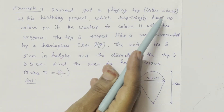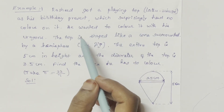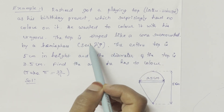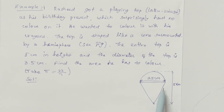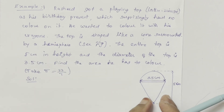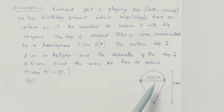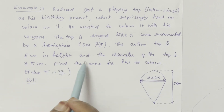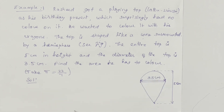Raseed got a playing top as his birthday present, which surprisingly had no colour on it. He wanted to colour it with his crayons. The top is shaped like a cone surmounted by a hemisphere — one cone on a hemisphere. The entire top is 5 cm in height and the diameter of the top is 3.5 cm. Find the area he has to colour. Take pi equal to 22 by 7.